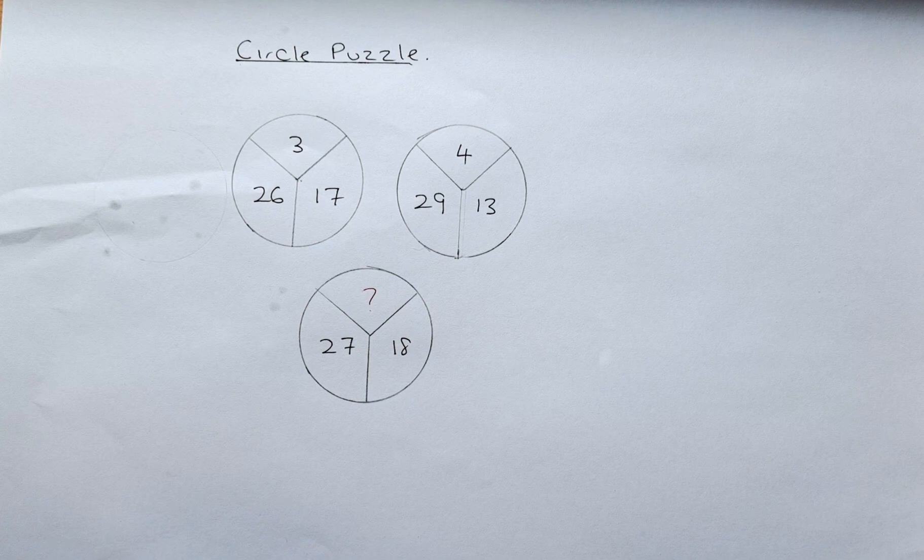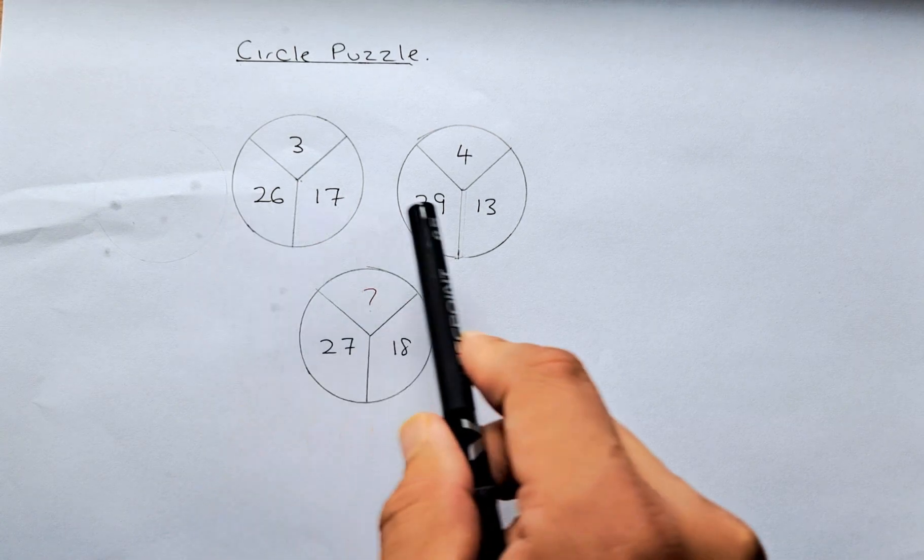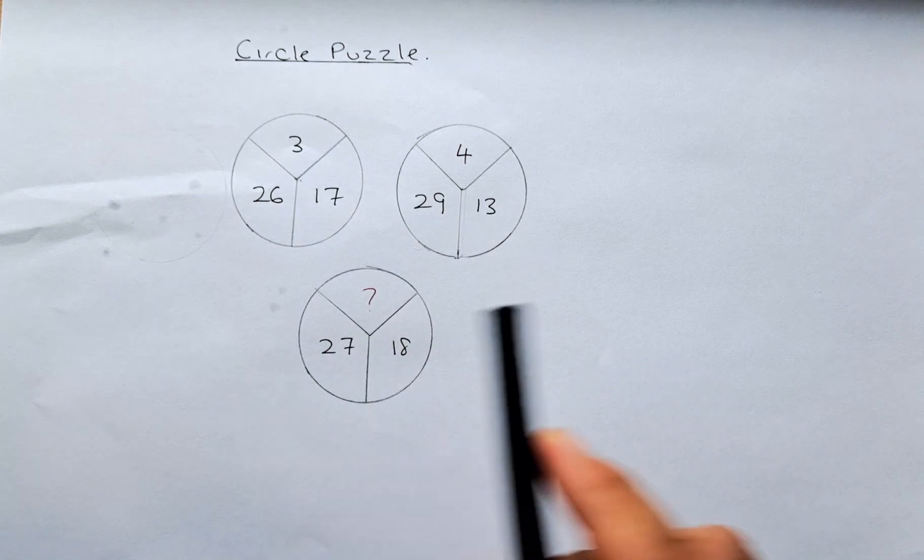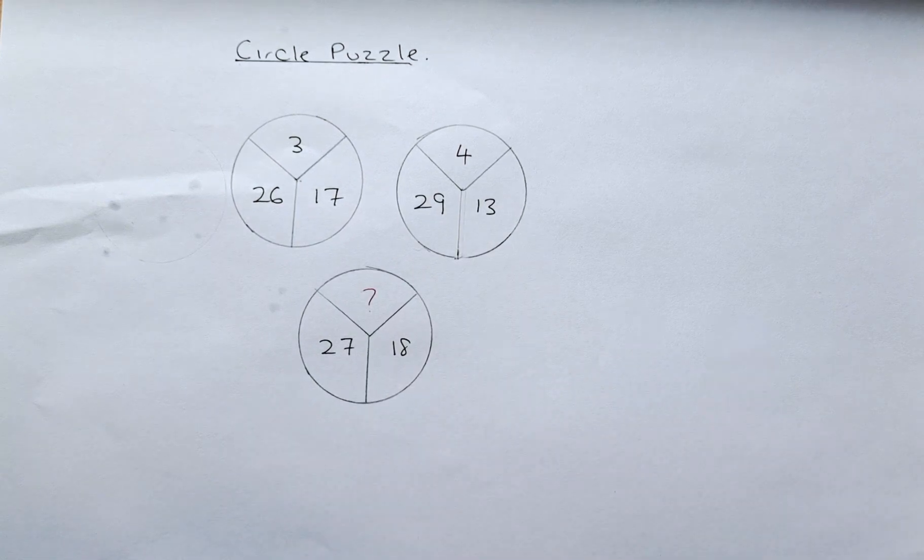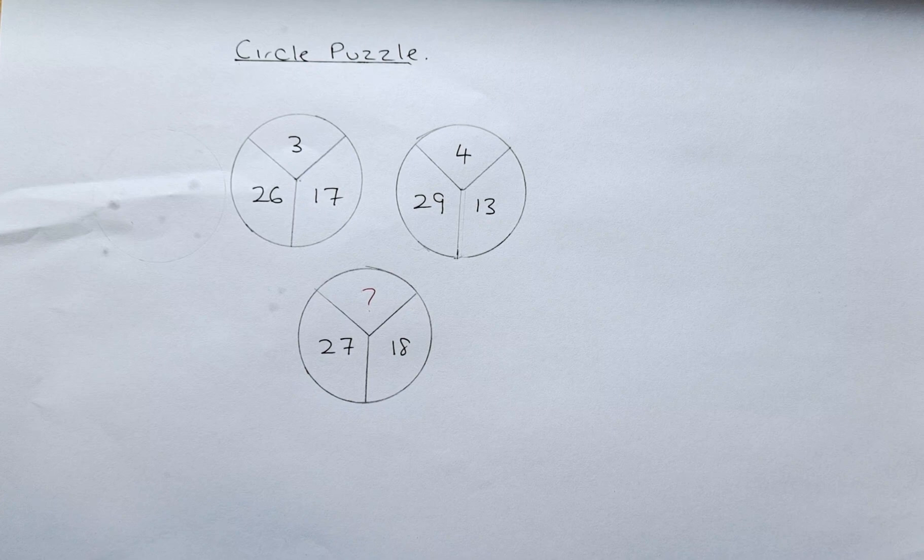As you can see, the numbers are quite interesting because the numbers on the left-hand side are bigger than the numbers on the right-hand side. And if you add the numbers, it doesn't make any sense. So the only possible answer I can think of is either you divide or subtract.